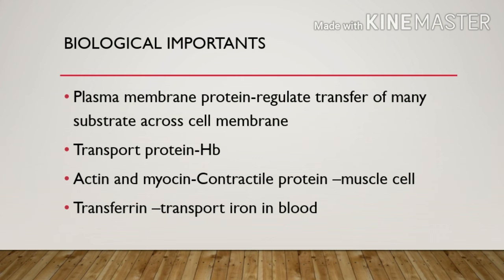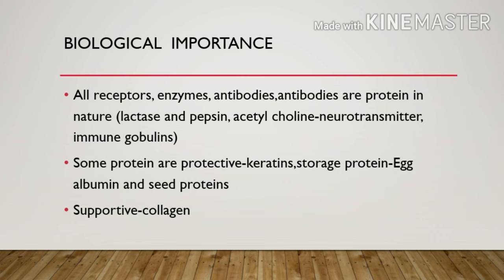Actin and myosin are proteins present in meat and are contractile proteins found in muscle cells. Transferrin transports iron in the blood. Other proteins include enzymes, antibodies, and receptors — all of these are proteinaceous in nature.